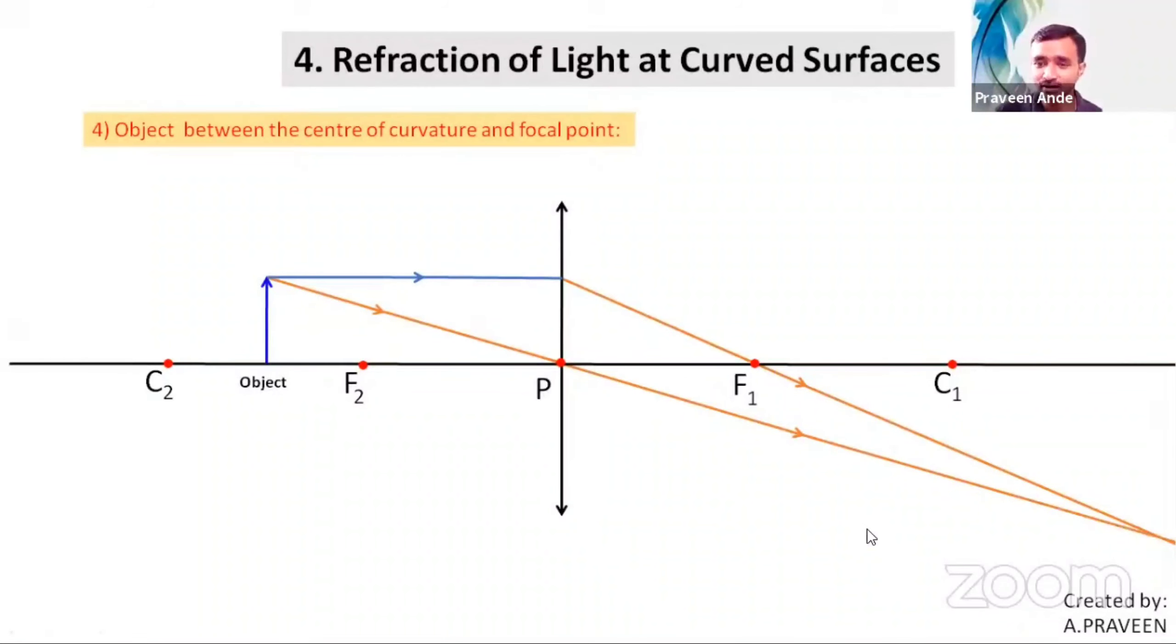Is it below the principal axis or above the principal axis? Below the principal axis. So what type of image is this? Inverted. The type of image is real image.